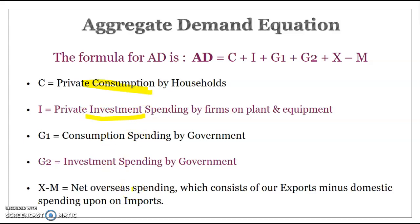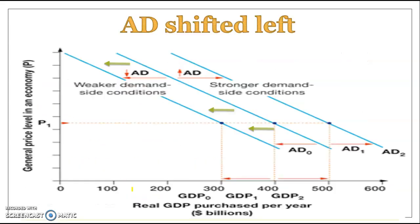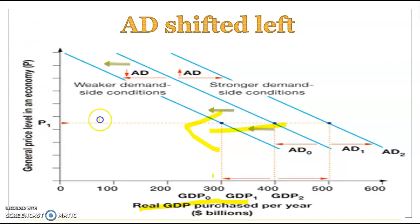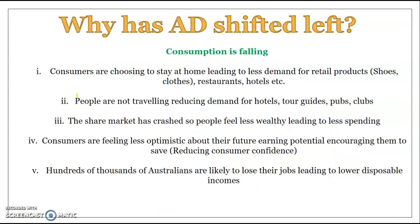The coronavirus has had a massive impact on aggregate demand. On this graph, GDP is measured on the x-axis and prices on the y-axis. The aggregate demand curve has shifted heavily to the left as a result of a reduction in spending, and that's caused a big decrease in production.